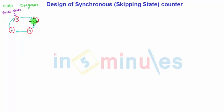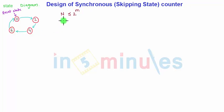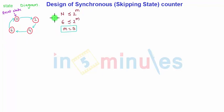The formula we use is: number of states n should be less than or equal to 2 raised to m, where m is the number of flip-flops. Here n is 6, so 6 ≤ 2^m gives m = 3. That means I am going to require 3 flip-flops.